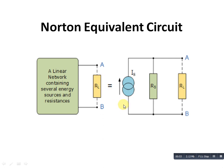In the Norton equivalent circuit, the current source is directly connected in parallel with RS, and RS is connected to RL — the load resistance, also called RNS or Norton equivalent resistance. This Norton current is dependent on RS and RL. Let us consider one example.